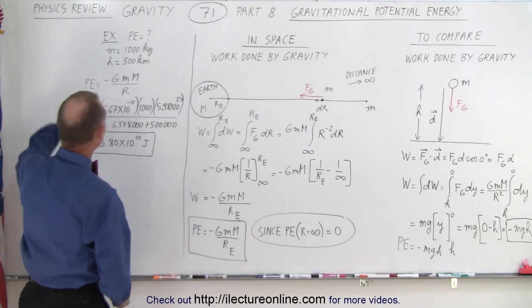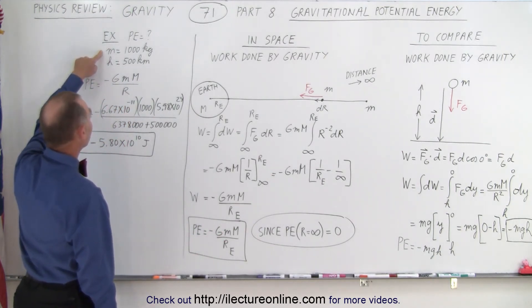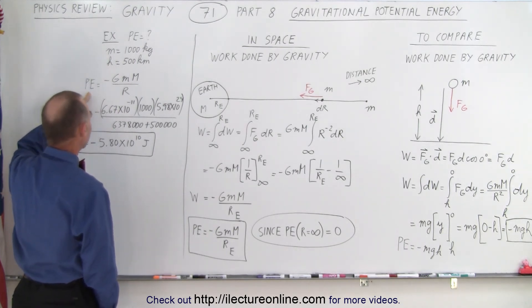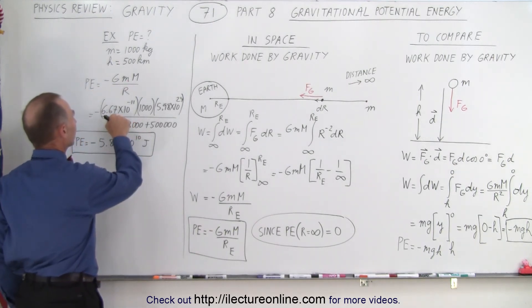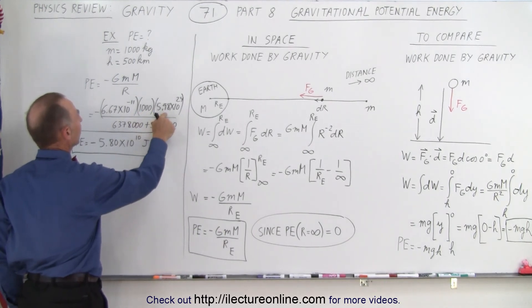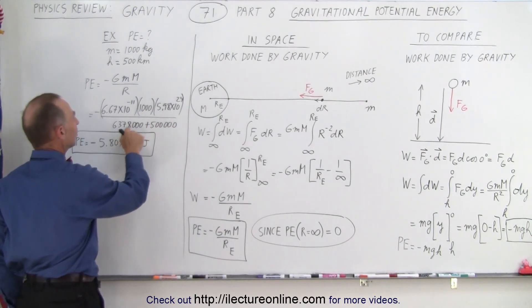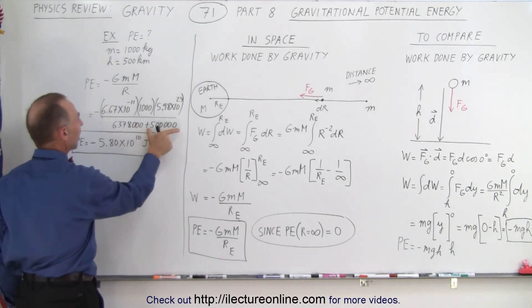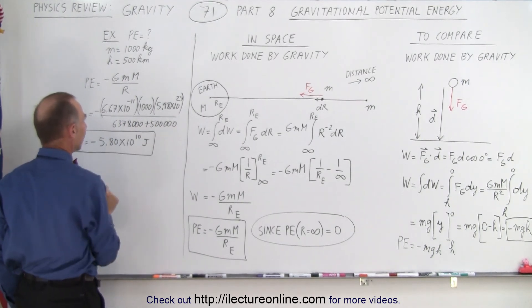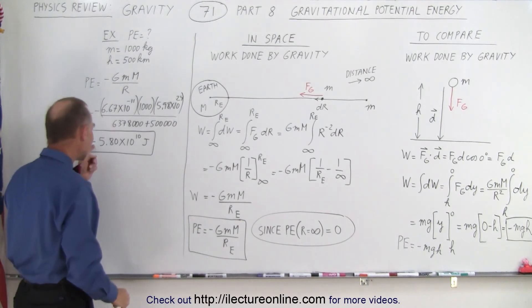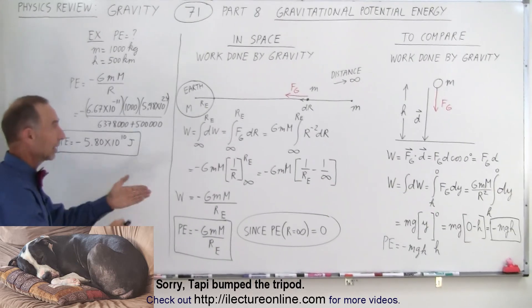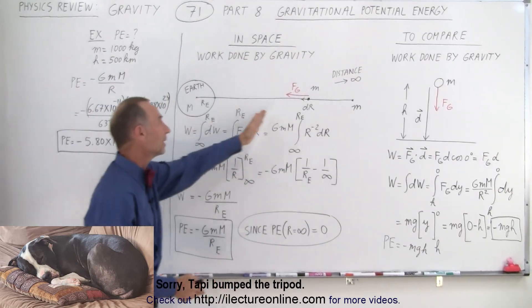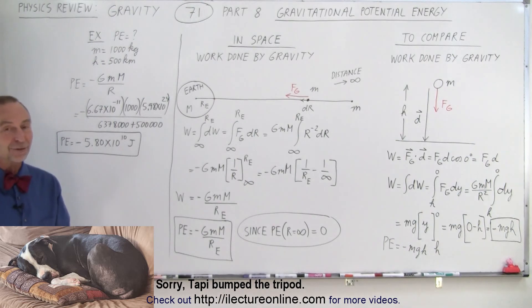As an example, let's say we have a satellite of a thousand kilograms at a height of 500 kilometers above the surface of the earth. Potential energy of that satellite will be minus GMm over r. Here's the constant of gravity, the mass of the satellite, the mass of the earth, and the distance from the center of the earth, which is the radius of the earth plus the height above the surface of the satellite. When you plug that into the calculator, you end up at negative 5.8 times 10 to the 10 joules. Again, negative of course because it is zero at infinity and therefore negative as you get closer. And that is how it's done.